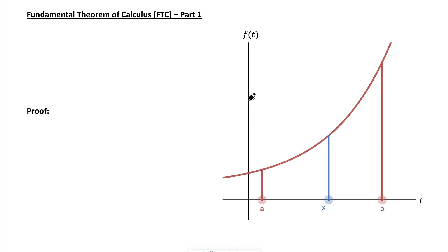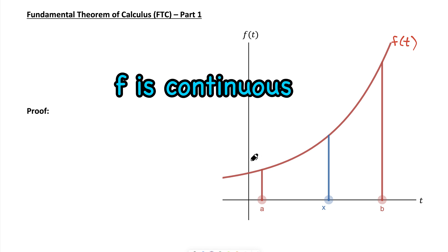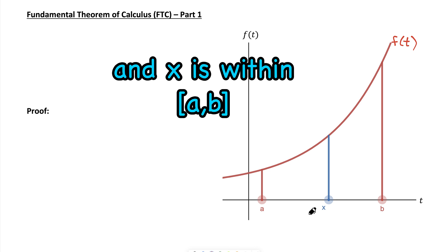Let me take you through a really nice proof for the first part of the fundamental theorem of calculus. I'll give you a simplified version of what it states, but you should know there are some conditions that have to be met. The function we're working with, typically we call it f of t, and we use the dummy variable t instead of x because we use x for our variable of choice within the interval. It's important to know that f is continuous on the closed interval between a and b, and our variable x is somewhere within a and b.